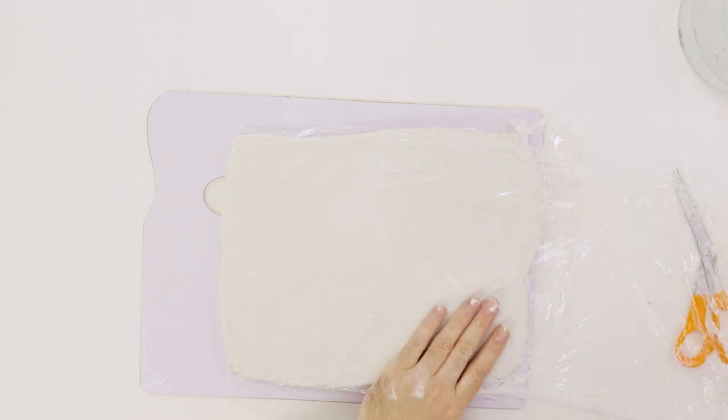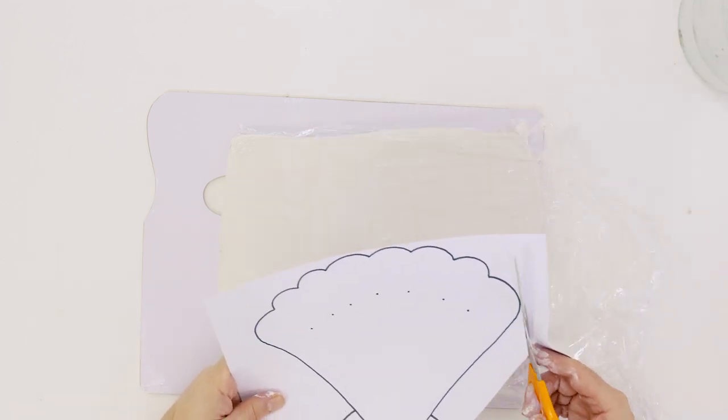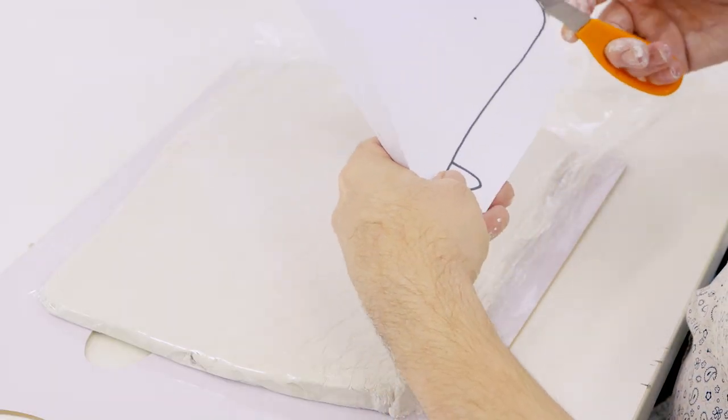Once the clay is rolled to the desired thickness, we can profile cut the shell outline printout. You can find this on our website.